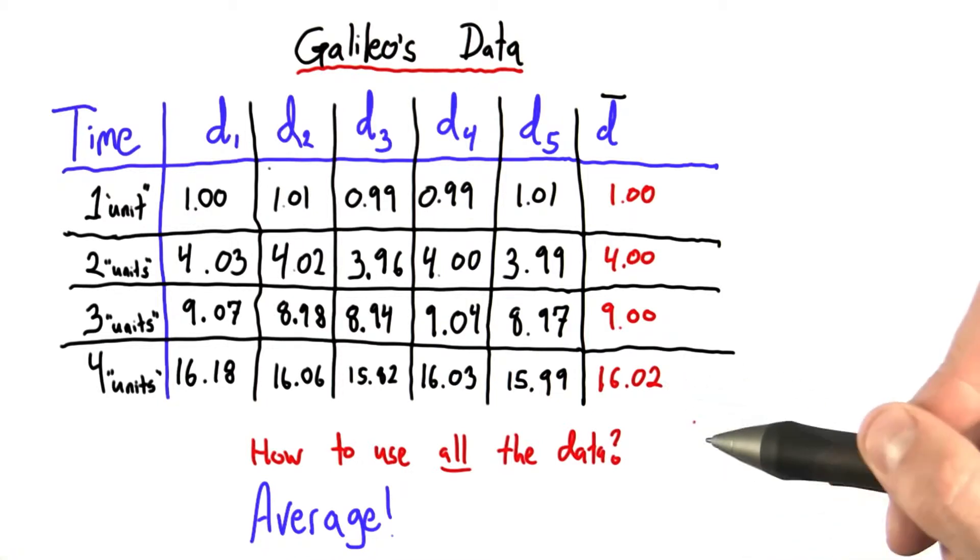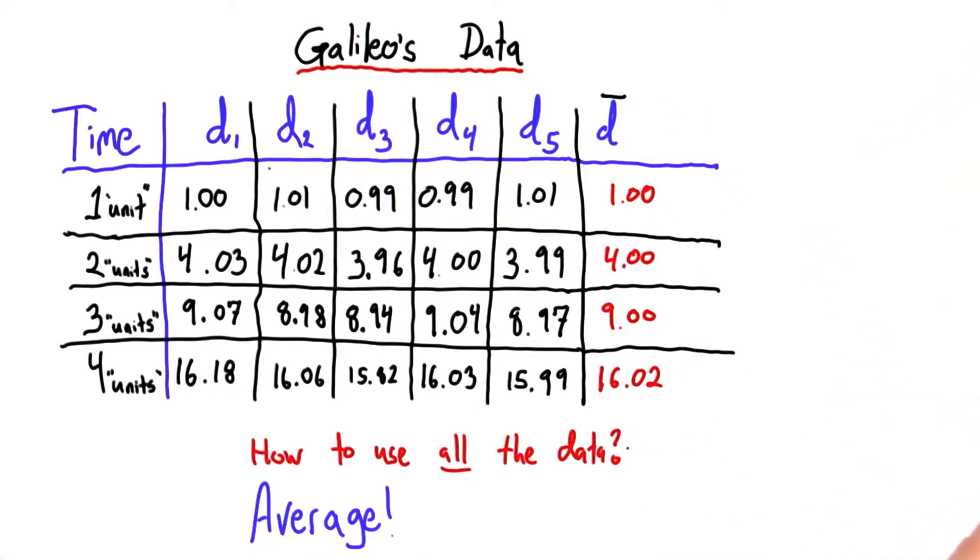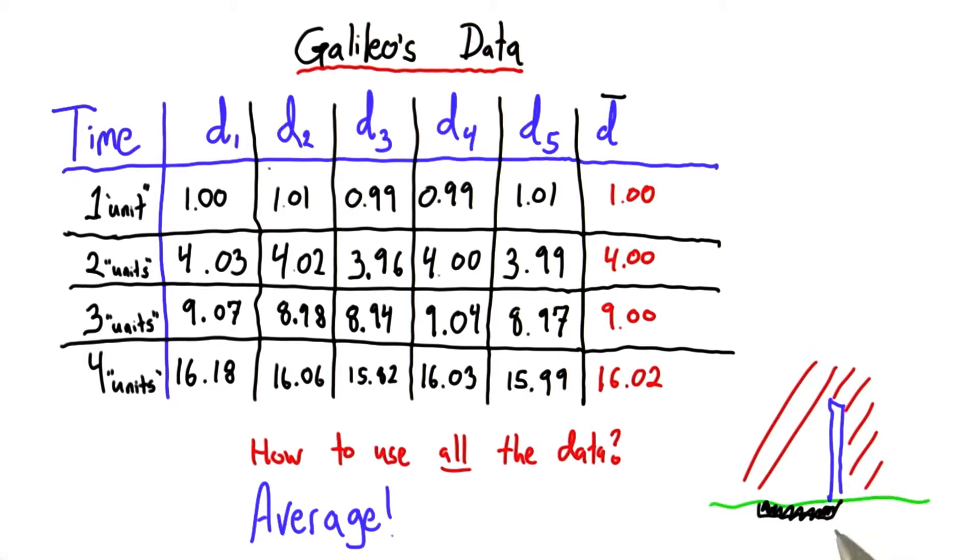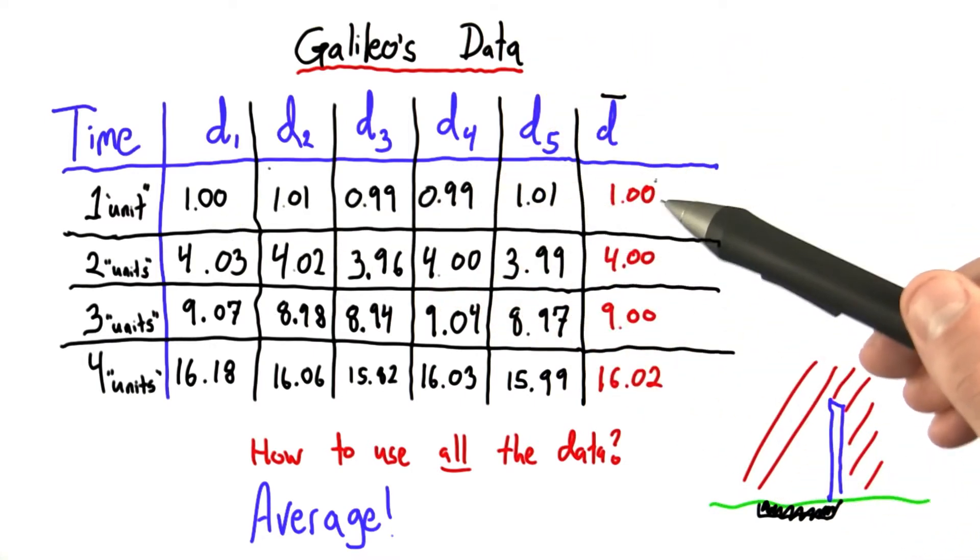Well, not necessarily, because one thing we've forgotten to do so far is calculate error. In the previous unit, we talked about how to calculate the error of a single measurement. Maybe that measurement was measuring the length of the shadow of something. But now we have multiple measurements. We have five measurements for each of these calculated values.